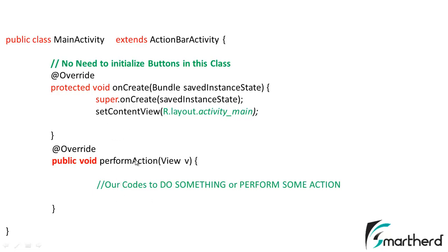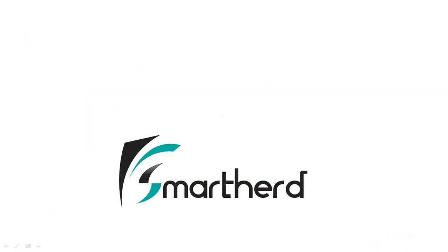Inside the performAction function you can write codes to do something — messaging, downloading, whatever you want. If you're not getting the codes right now, don't worry. In the next tutorial I will discuss the codes and how to differentiate between the two buttons — the first button and the second button. Stay tuned. This is Shrakes from SmartHerd signing off. Please share the video, subscribe to my channel, and do leave a comment below. Thank you.